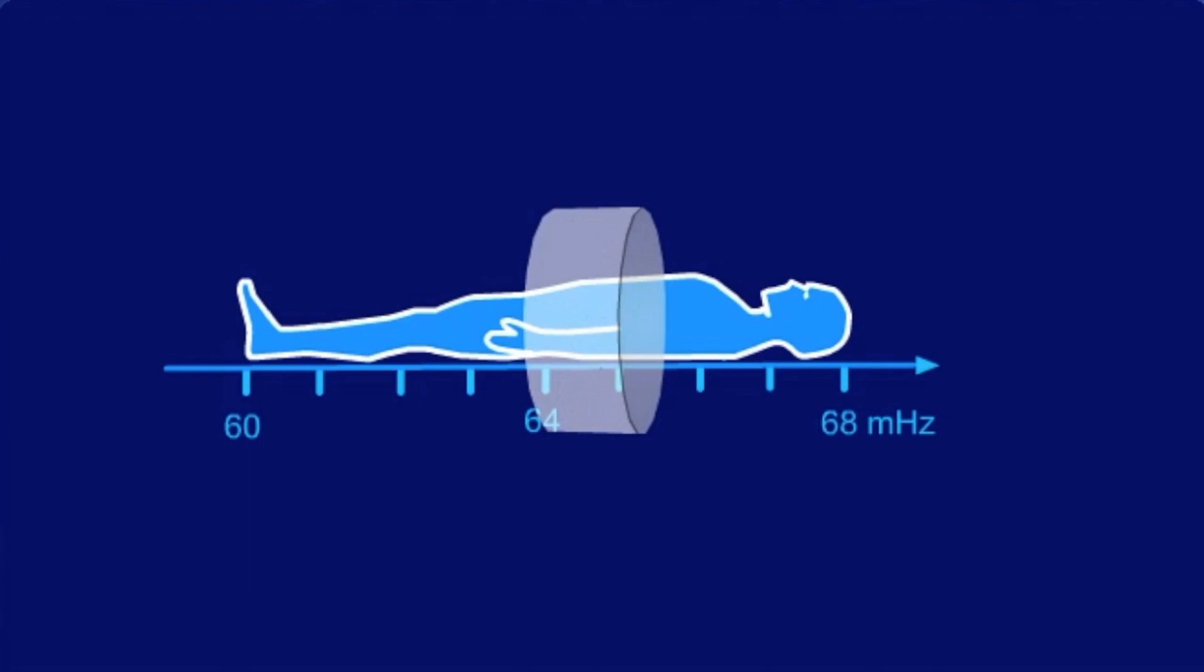We can select a different slice thickness in two ways. One solution is to send in not only one specific frequency, which is not done in practice, but an RF pulse that has a range of frequencies.